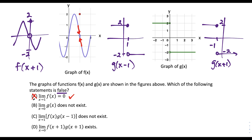For choice B, we have the limit as x approaches zero of g of x does not exist. If we look at the graph, as we approach zero on the left side, we're heading to a y value of two. And as we approach zero on the right side, we're heading to a y value of negative two. So since our left and right side limits don't match, our limit does not exist. So that's a true statement, which means we're eliminating it because we want the false statement.